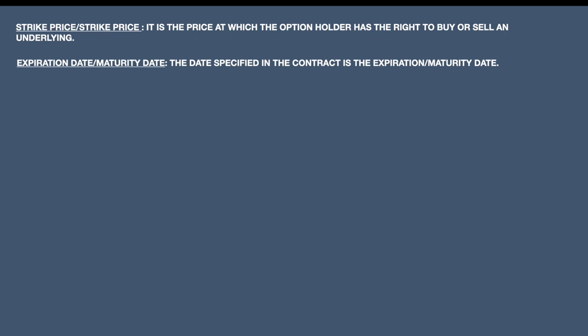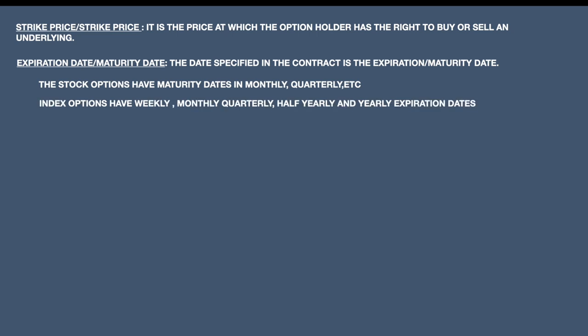Expiration date, or maturity date, is the date specified by the contract at which the expiration or maturity of the contract happens. We should understand that options are contracts between two persons — if you are buying a particular option, the other person should sell it to you. So an option is a zero-sum game. Stock options have maturity dates monthly and quarterly, whereas index options have weekly, monthly, quarterly, half-yearly and yearly expiration dates.